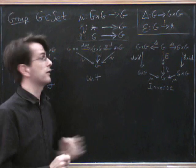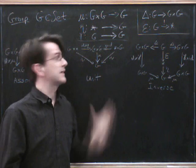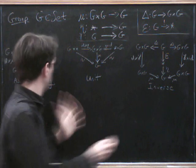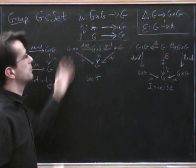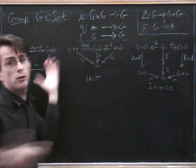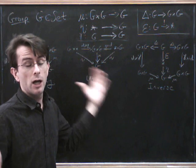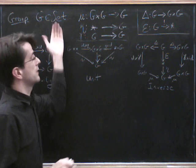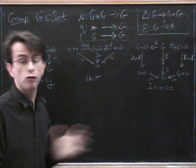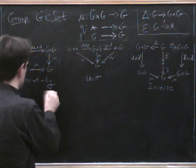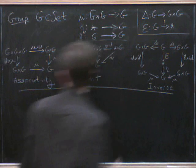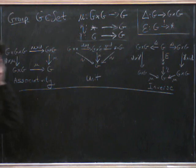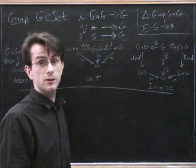That's categories, monoidal categories, whose monoidal product is the categorical product. So what I'm saying is we can just take this definition now. If you give me a cartesian category, then we can just take this definition and say what it means to have a group object in such a thing. So let me just write down the first five cartesian categories that spring to mind.